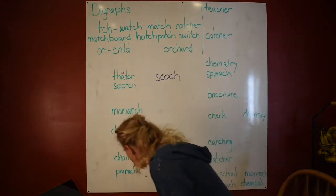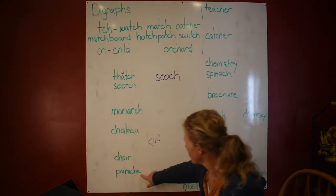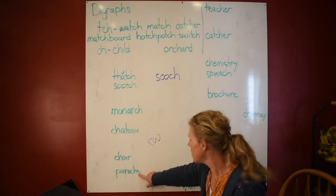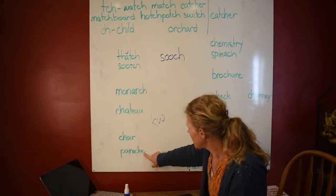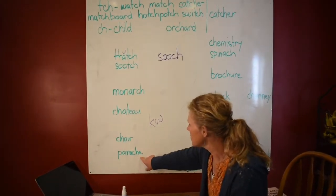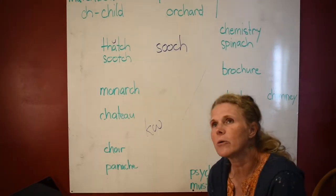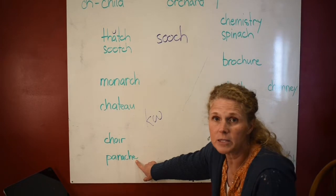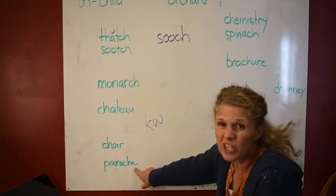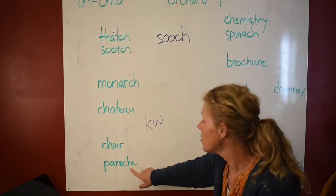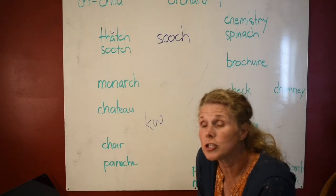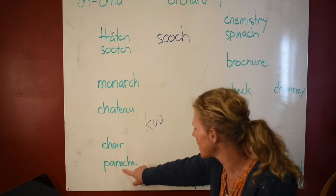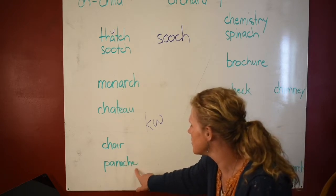Now look at this one — right off the bat you can tell that this is a French word. Can you see that? Because in the English language there's always a reason for the E to be there, but there's not really a reason here. The reason for that E to be there is to say 'I'm French.' So right off the bat, you see you can't jump over two letters — we know that this is a French word.